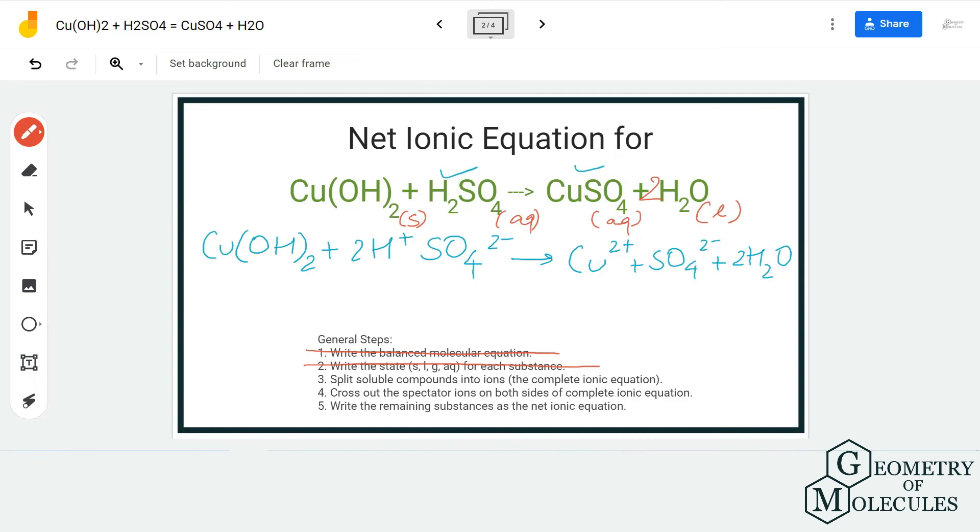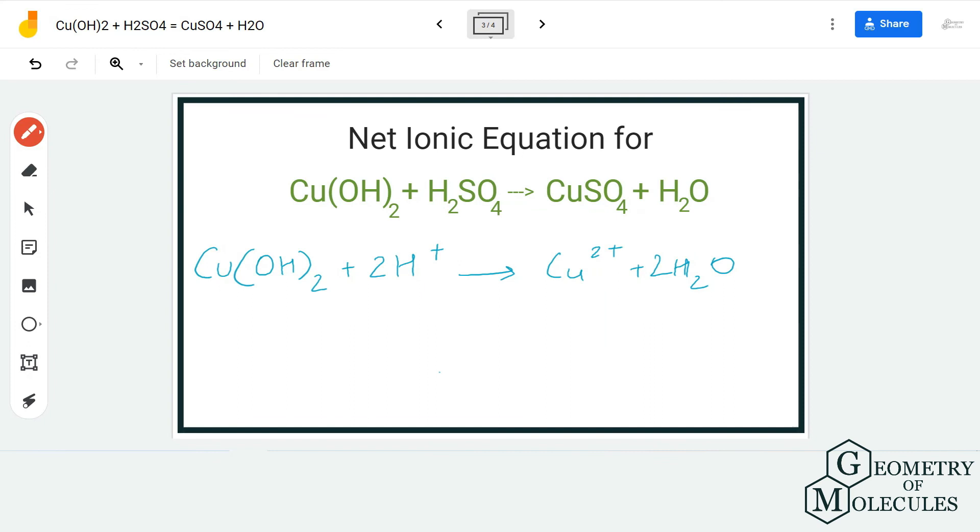Spectator ions are ions that do not change on both sides of the equation. If you look closely at this equation, SO₄²⁻ ions are the spectator ions on both reactant and product sides. You can cross those out, and the remaining equation is the net ionic equation.